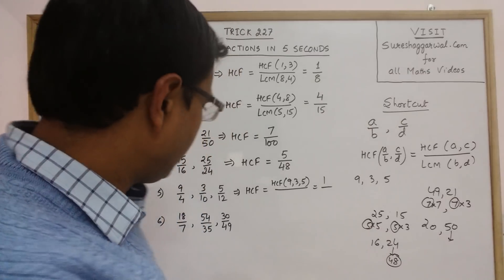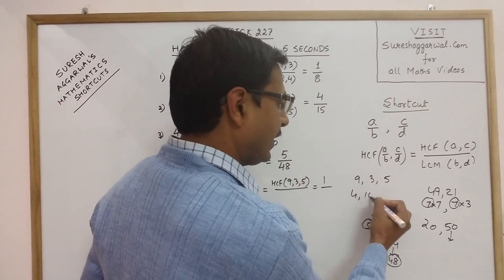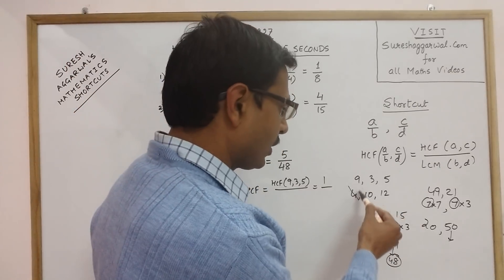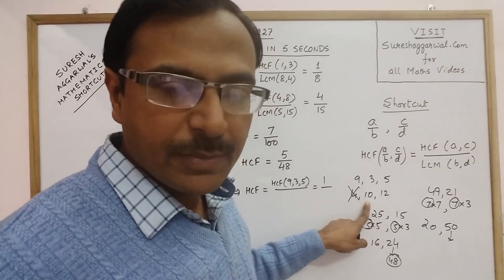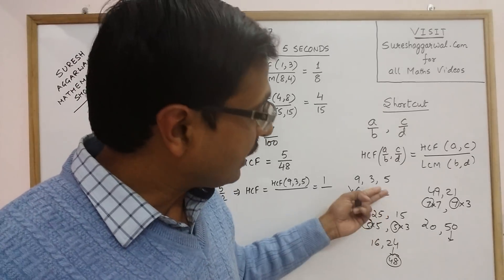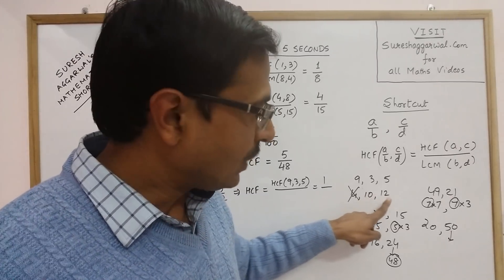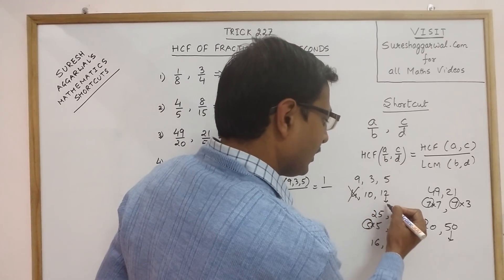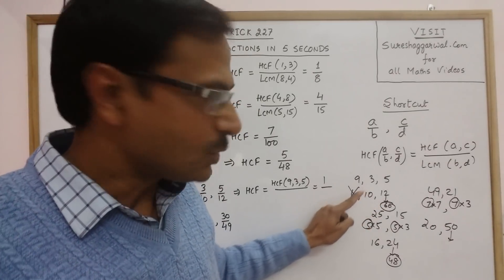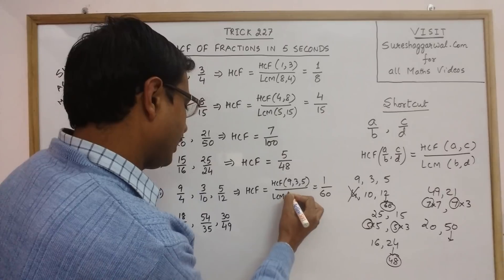For finding the LCM of the denominators 4, 10, and 12: since 4 divides 12 exactly, you can leave out 4. Now only 10 and 12 remain. Since 10 does not divide 12 exactly, take multiples of 12. The first multiple of 12 that is divisible by 10 is 60. So the LCM of 4, 10, and 12 is 60, and your final answer is 1/60.